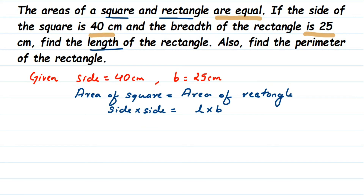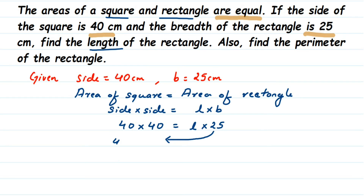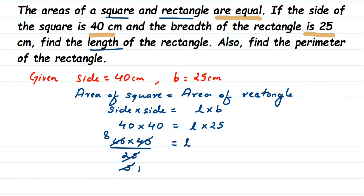Substituting what we know: 40 × 40 = L × 25. We have an equation now. To find L, we transpose 25 to the other side — since it's under multiplication, it goes to division. So L = (40 × 40) / 25. Cancelling using the five-times table: 40 ÷ 5 = 8 and 25 ÷ 5 = 5, leaving 8 × 8 = 64 in the numerator. Therefore, length = 64 centimeters.